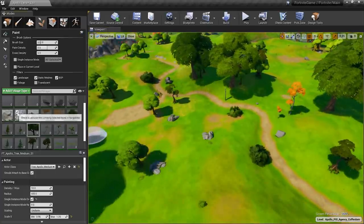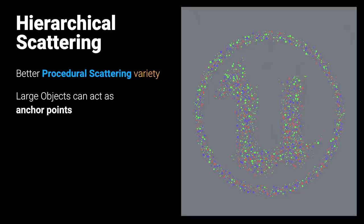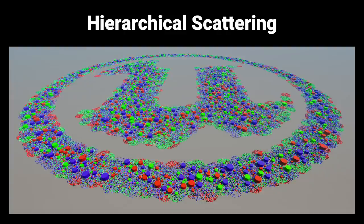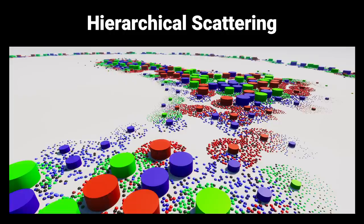Actor foliage was definitely requested by level designers and allowed them to actually get use out of the foliage paint tool. The next feature is improved hierarchical scattering, which adds better procedural scattering variety. Large objects can act as anchor points and spawn smaller objects of a different variety — Unreal Engine has had procedural scattering for a while, but previously lacked nested levels or hierarchy. A debug view shows objects spawned using a landscape mask with different types of objects spawned as children — cylinder objects spawning smaller sphere objects — enabling things like large rock spires spawning smaller pieces of rock scree.